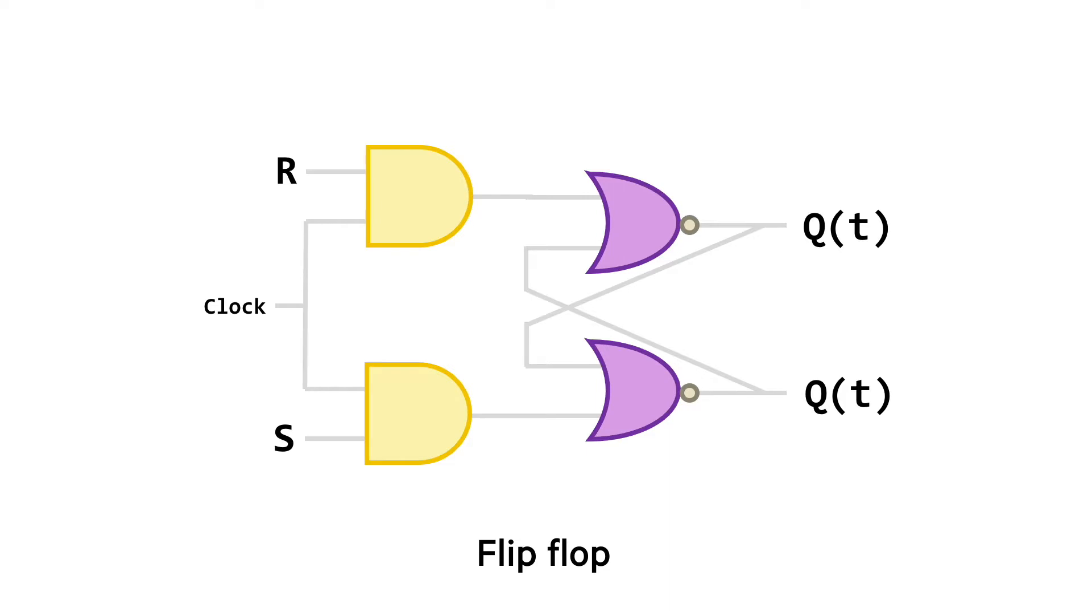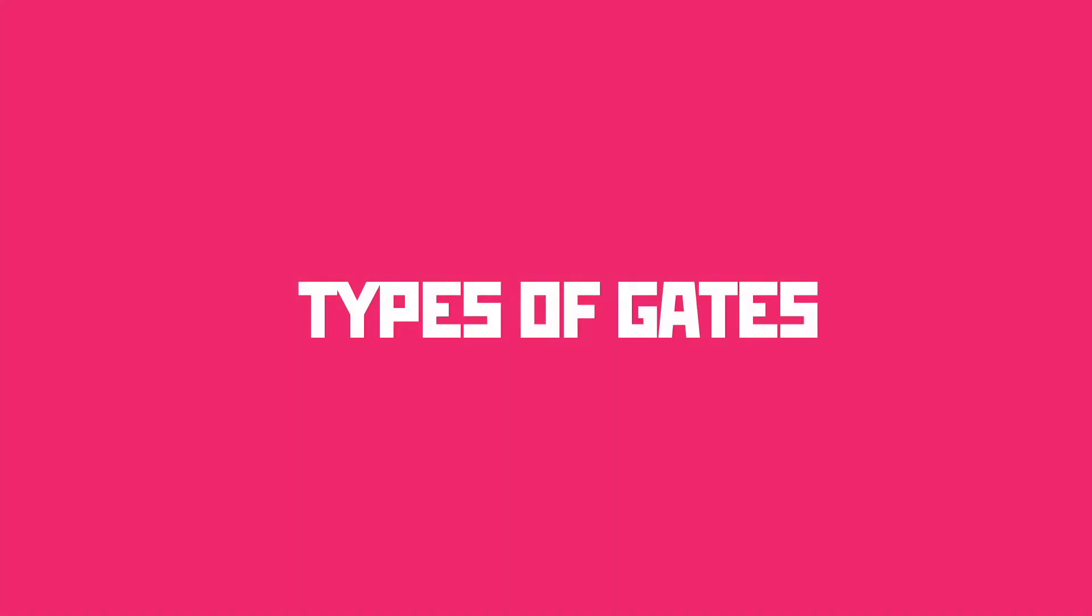Now, multiply that by trillions of the things, and you've got your basic RAM chip. But what are these gates, and what are they actually doing?